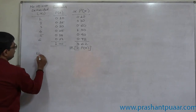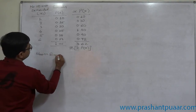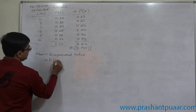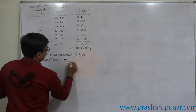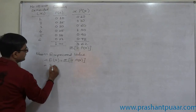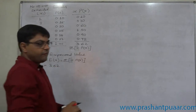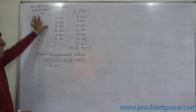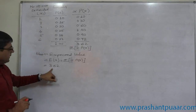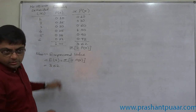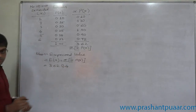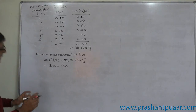So the mean, or expected value, E(x) equals sigma x into P(x), which is 3.62. Now, if we consider the reality that this is data regarding any product, we know we cannot deliver any product which is incomplete. So considering that reality, we can round off the mean to 4. It is not compulsory, but you can do it.